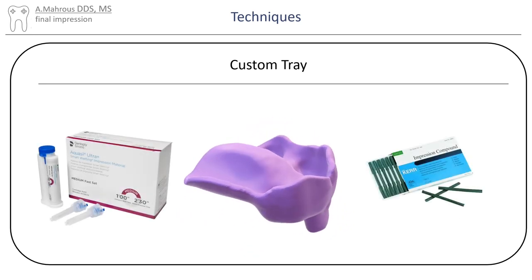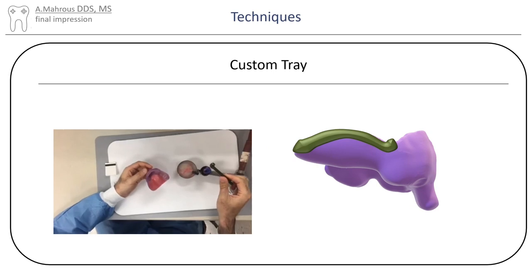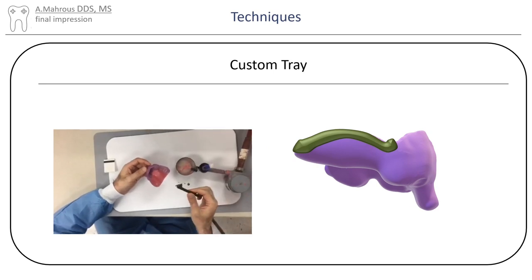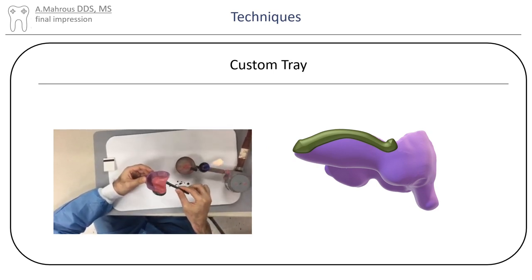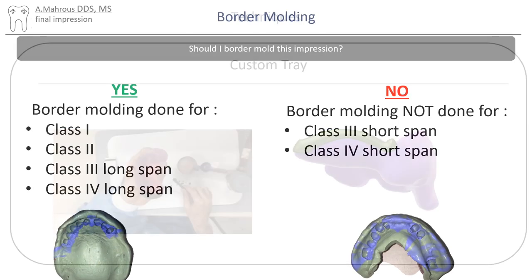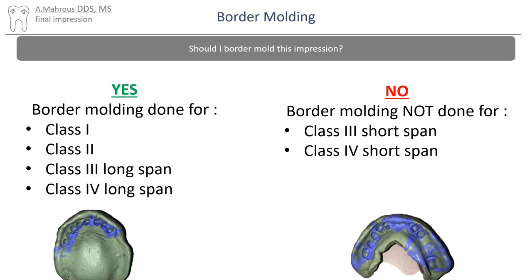Border molding can be completed either by using PVS or green impression compound. Green stick impression compound is probably the cheapest and most forgiving of the two. Border molding is done primarily with class 1, 2, and long span class 3 and 4 cases. Short span class 3 and 4 cases do not need border molding.